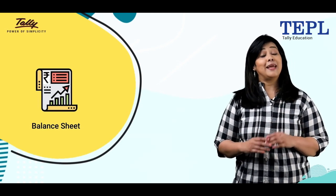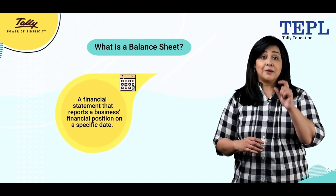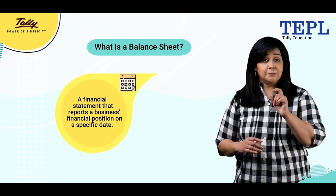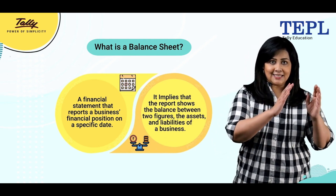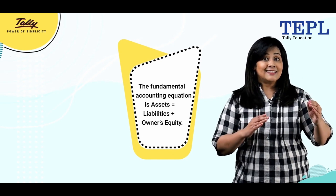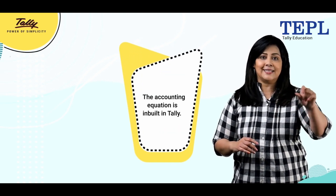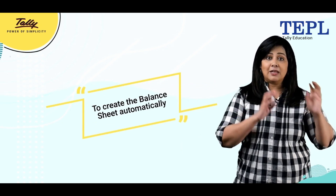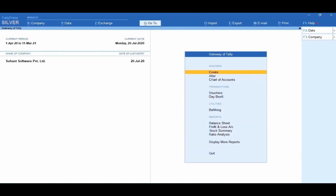Let us move to the next topic: the balance sheet. A balance sheet is a financial statement that reports a business's financial position on a specific date. The term implies the balance between two figures — the assets and liabilities of a business. The fundamental accounting equation is: Assets = Liabilities + Owner's Equity. This equation is inbuilt in Tally; it takes information from the chart of accounts and transactions entered to create the balance sheet automatically.